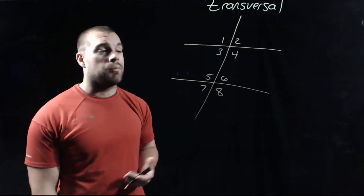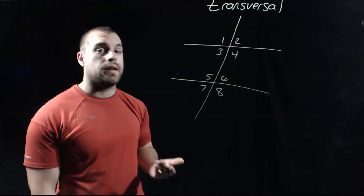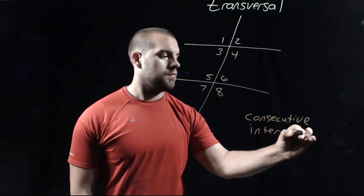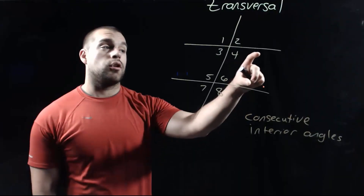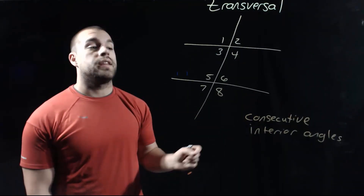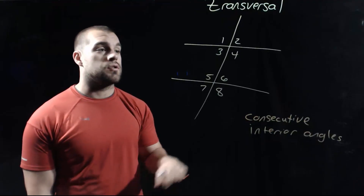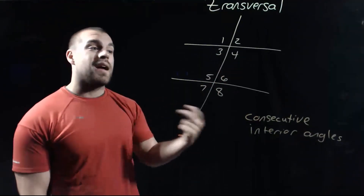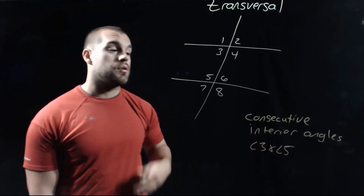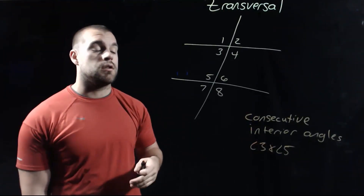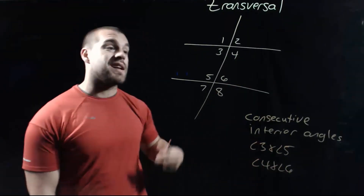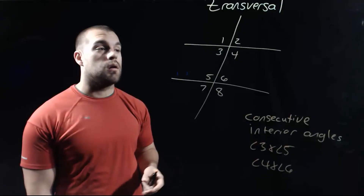Our last kind of angle pair are called consecutive interior angles. These are interior angles, so they're going to be between our two lines, but consecutive means they're on the same side of the transversal. Angles three and five are both on the inside and both on the left side of the transversal, so they are an example of consecutive interior angles. We've also got angle four and angle six as a consecutive interior pair.